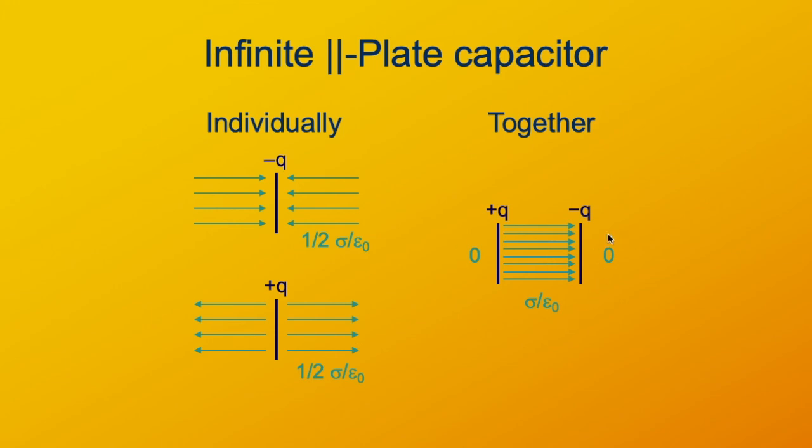Outside the capacitor, on the outside of the plate, the negative plate would have a field directed to the left. The positive plate would have an equal field directed to the right. So on the right side, the fields cancel. You can use exactly the same reasoning to see that on the left side of the plate, the fields are going to cancel as well. So all the field is in between the plates, therefore all the energy is between the plates of the capacitor.